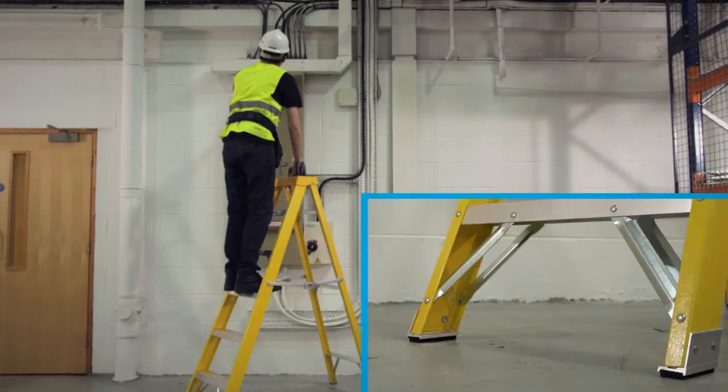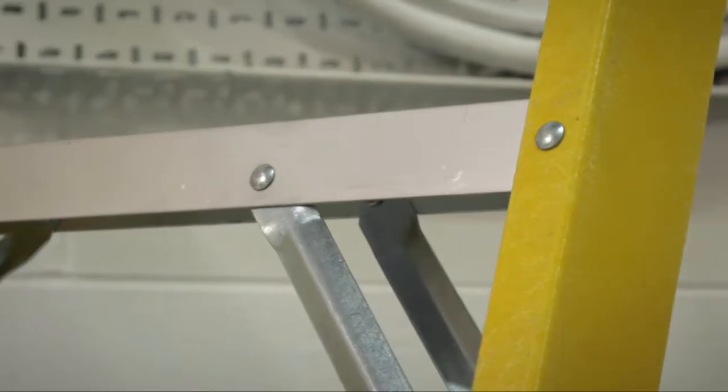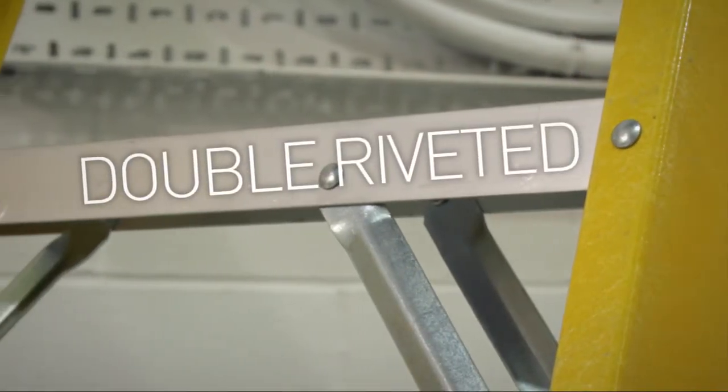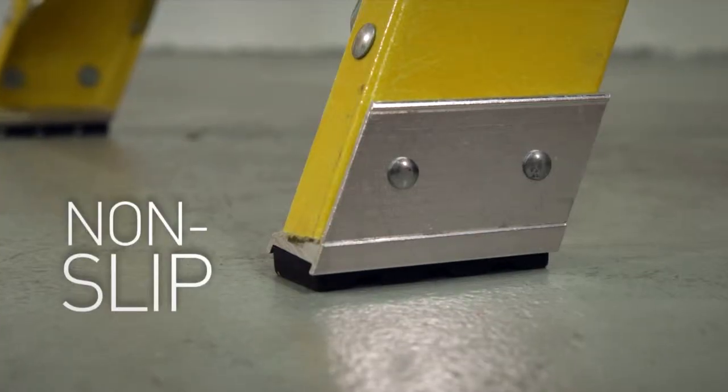The GRP Swingback Steps are built with all the strength and safety you'd expect from Zagas ladders, including double riveted aluminium treads, locking aluminium sidearms and riveted non-slip feet.